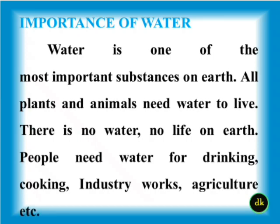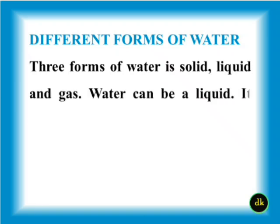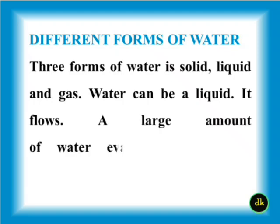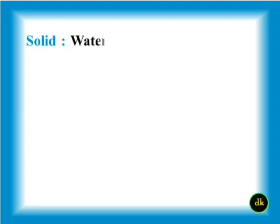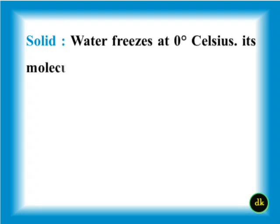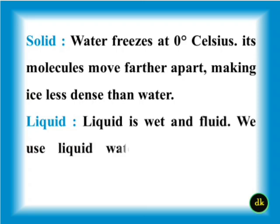Different forms of water: Water exists in three forms — solid, liquid, and gas. Water can be a liquid and it flows. A large amount of water evaporates from the surface of oceans, rivers, and lakes. Solid water forms at zero degrees Celsius; its molecules move further apart, making ice less dense than liquid water.